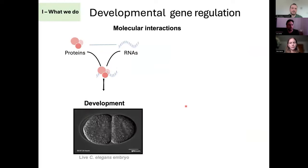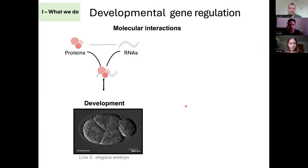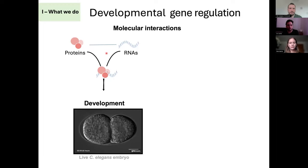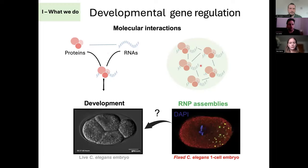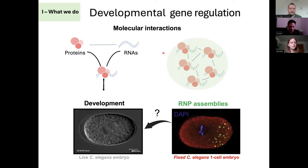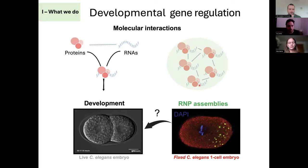Broadly speaking, in the lab, we use C. elegans to study how specific molecular interactions contribute to regulate gene expression programs that are important for animal development, with a particular interest in understanding how the organization of gene regulatory molecules into larger and local ribonucleoprotein networks contributes to cell function.